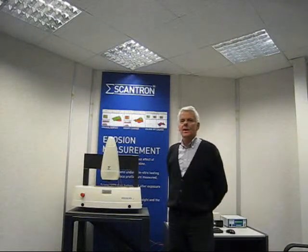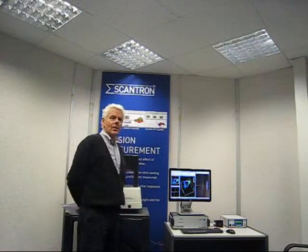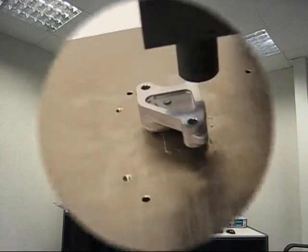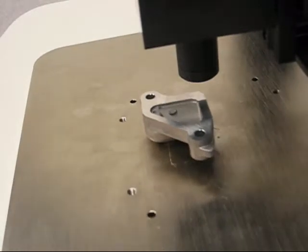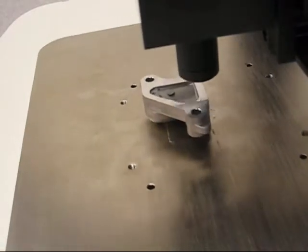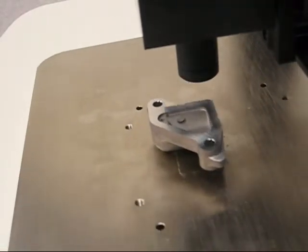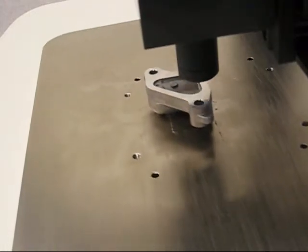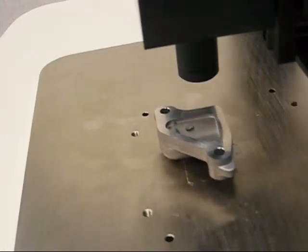This is a short demonstration of ProScan 2100 measuring flatness on a mechanical seal. Here we're using a chromatic aberration sensor with 10 nanometer resolution.